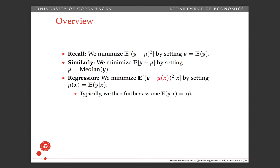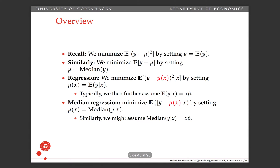When you condition on x, it's all the same things. The expectation is conditional on x, and mu is a function of x. You still minimize it by setting it equal to the expectation of y conditional on x. And the same thing with the median — if you want to minimize the conditionally expected absolute residual, then you set it equal to the conditional median.